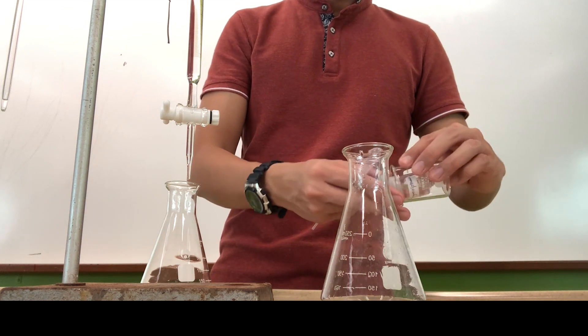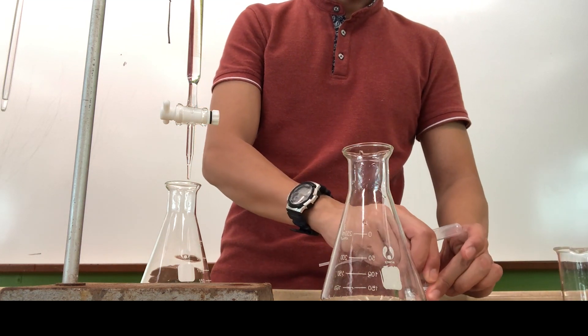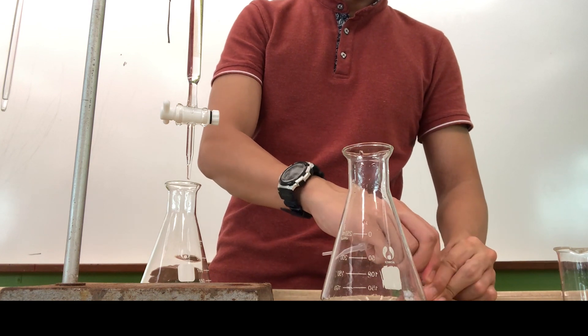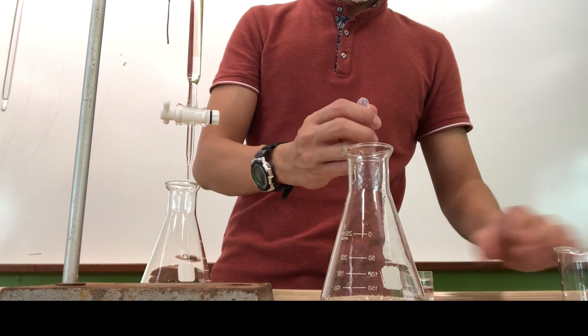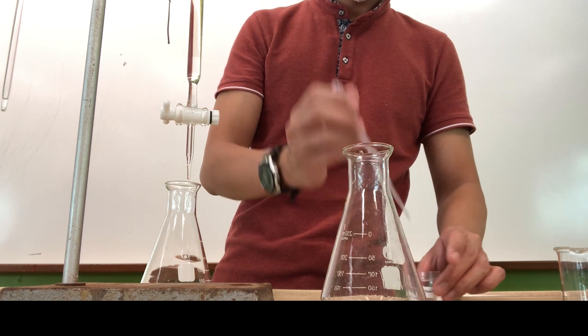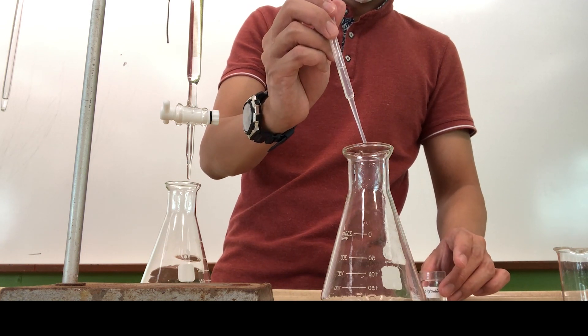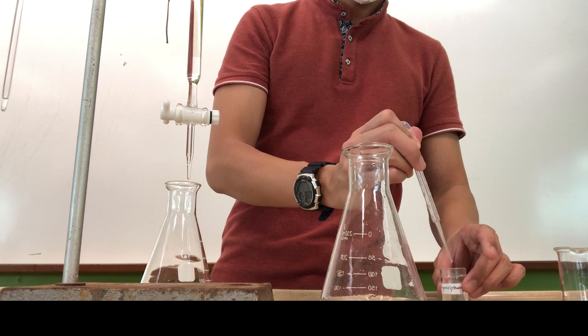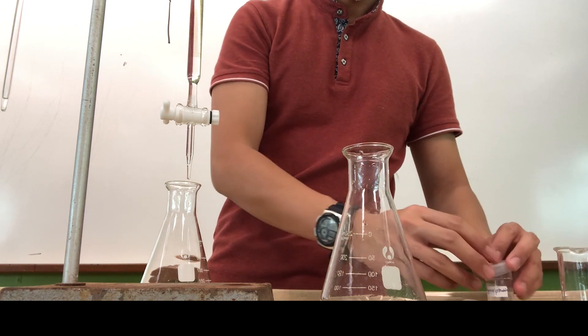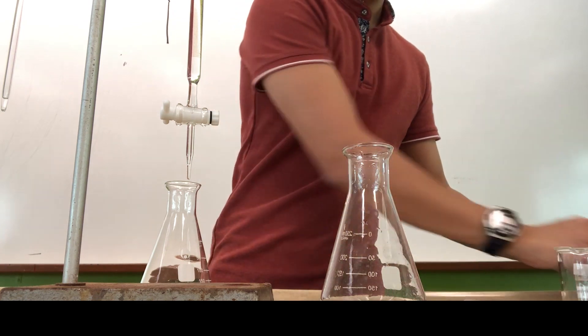Now we are going to put in the indicator. So for thymolphthalein, just like all your other indicators, you only need about two to three drops of it. And when you add it in, do take note of what is the original color of the indicator in this solution. As you can see over here, thymolphthalein is actually colorless in the solution of an acid.